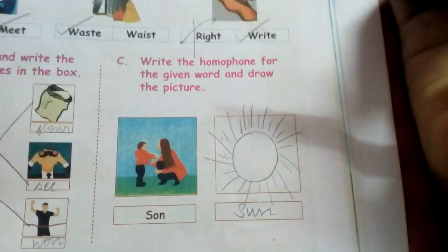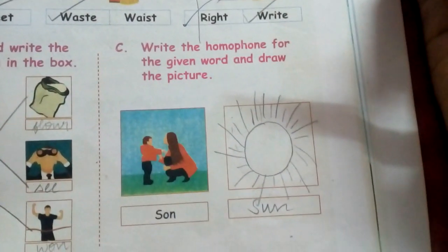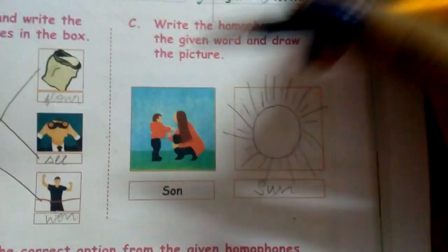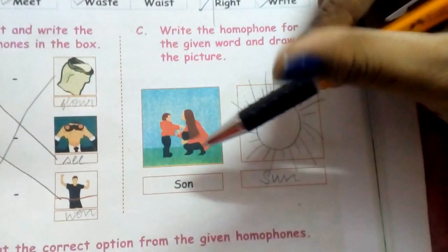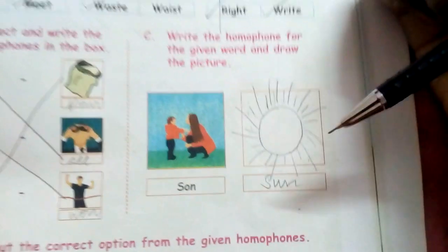Write the homophones for the given words and draw the picture. 'Sun' — and here is the homophone 'son'. Okay.